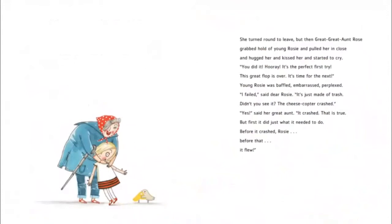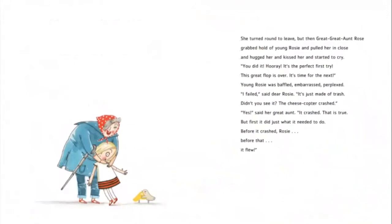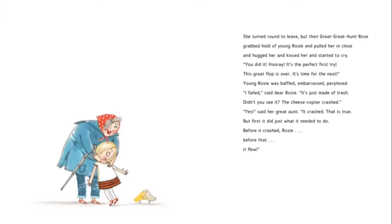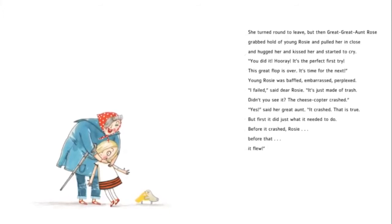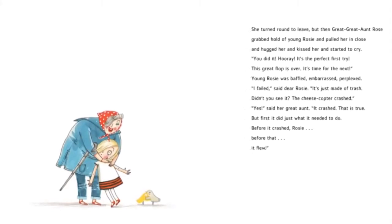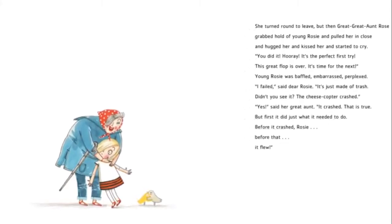Then she turned round to leave but then great-great-aunt Rose grabbed hold of young Rosie and pulled her in close and hugged her and kissed her and started to cry. You did it! Hooray! It's the perfect first try.